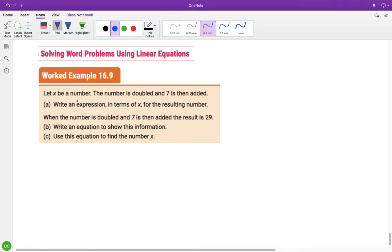Alright, so let x be a number. The number is doubled. So is doubled means you're going to multiply it by two. That's what doubled means. It means multiplying by two. And then seven is added. Now, that's quite clear. That doesn't really need to be translated. That's a plus seven. Seven is added.